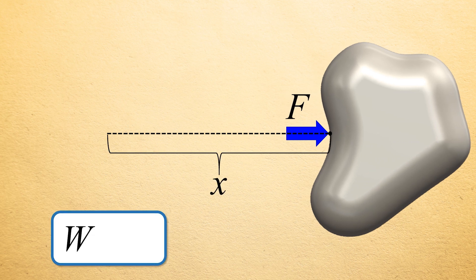the work W performed on the body is a positive scalar value that equals the magnitude of the constant force multiplied by the distance over which the body is displaced. Thus, the units of work and consequently energy are in newton meters or joules.